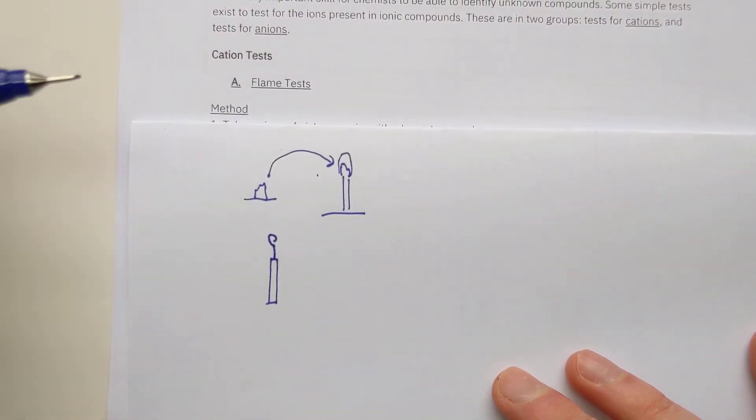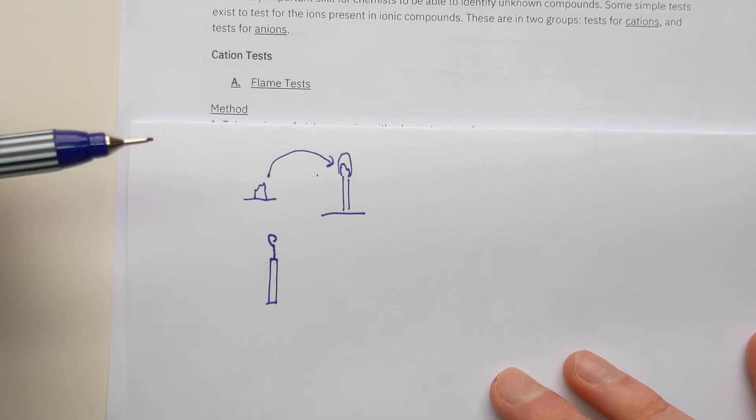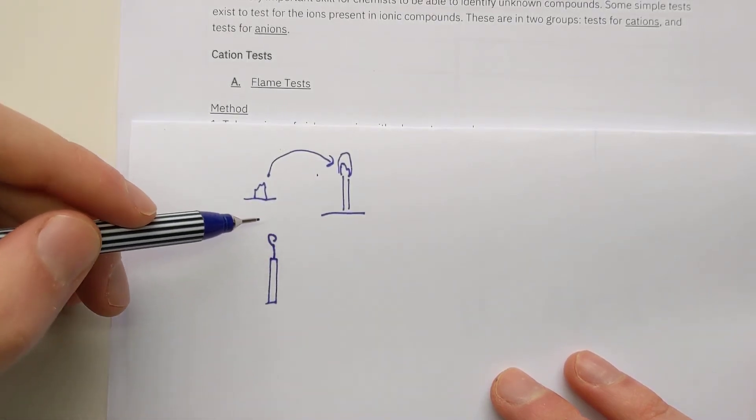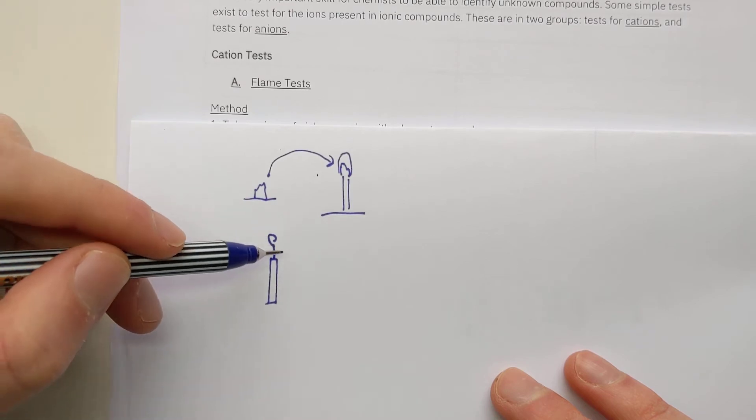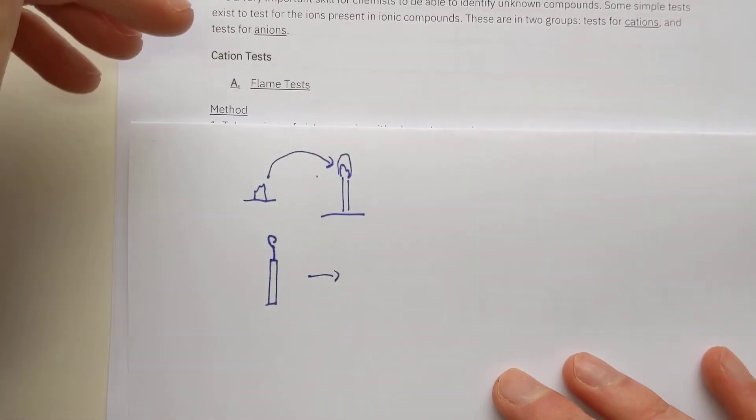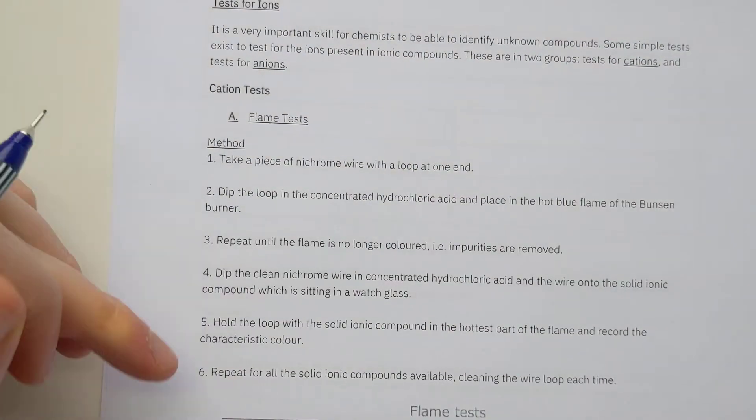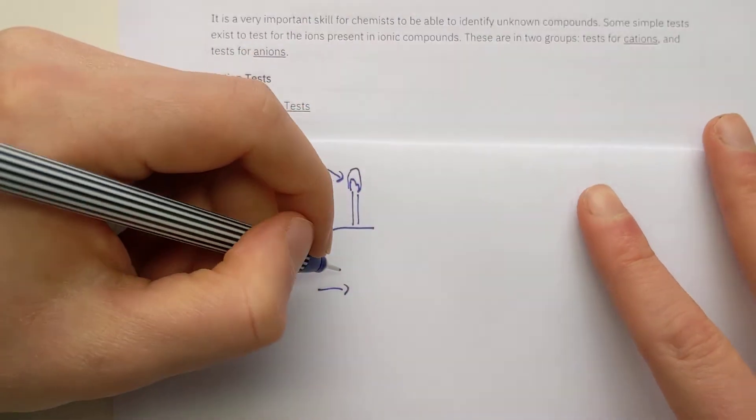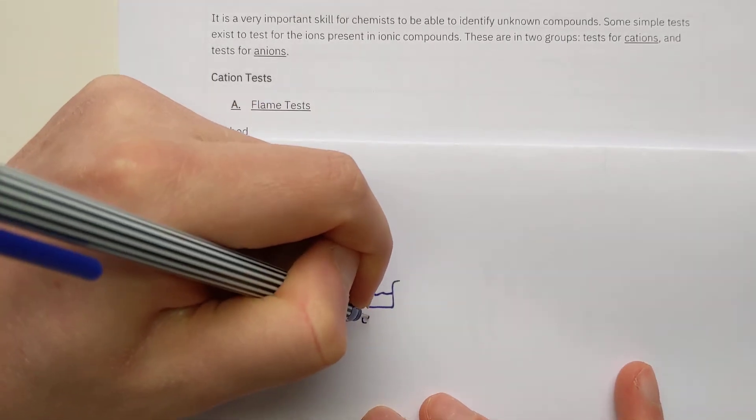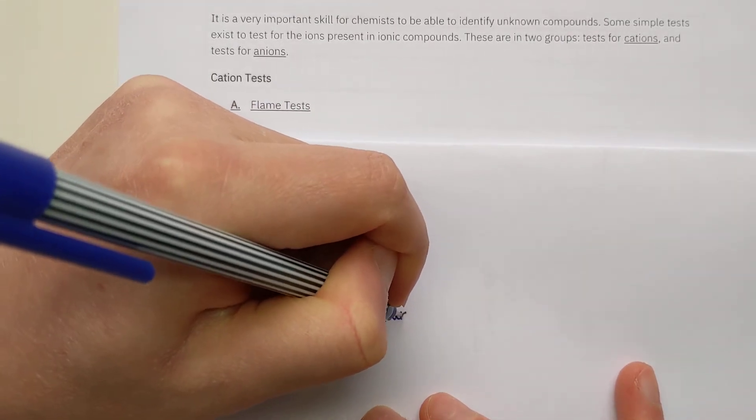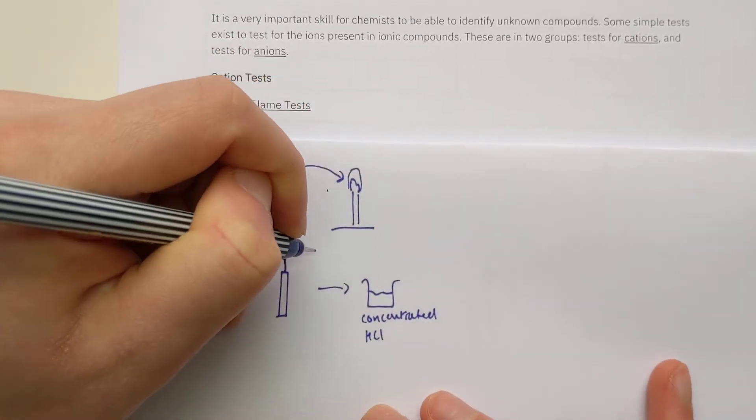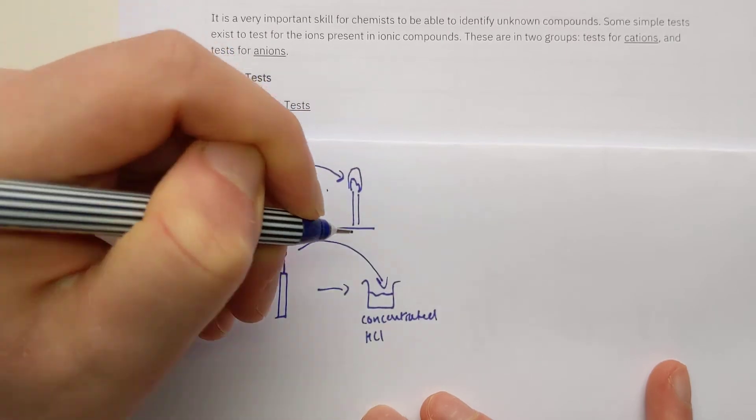Now I can't just go straight and do that. There's a little process I have to go through first because I can't guarantee that this is completely clean. If it's not clean, I might get a false result if there's something left over from the last experiment we did. So the cleaning process is like this, and this is contained in your notes. I'm not just giving you extra detail. You do need to know this. We will clean it by dipping it in a beaker of concentrated, so not very dilute, very concentrated hydrochloric acid. So I'll just let you dip the end of the beaker in there.